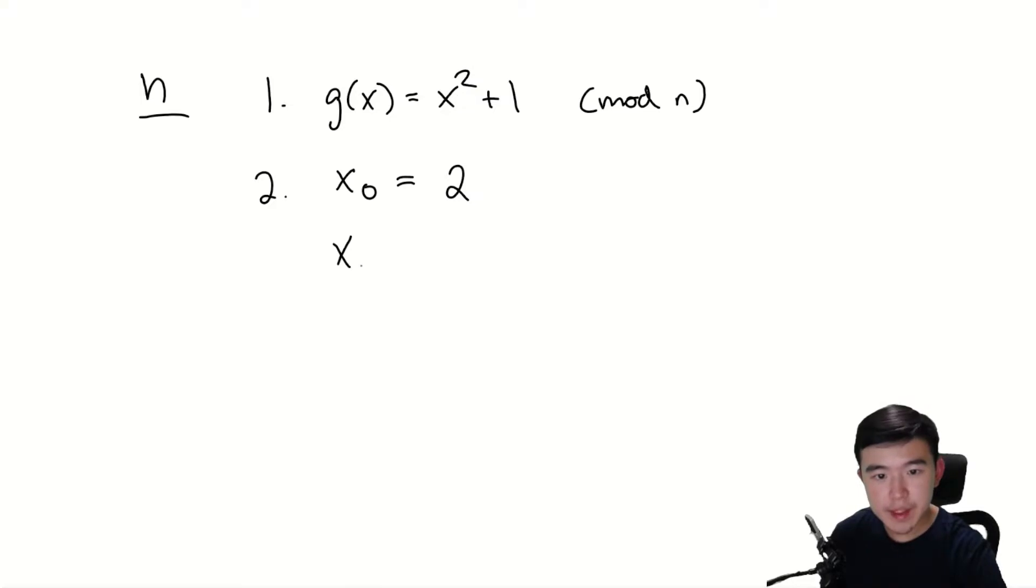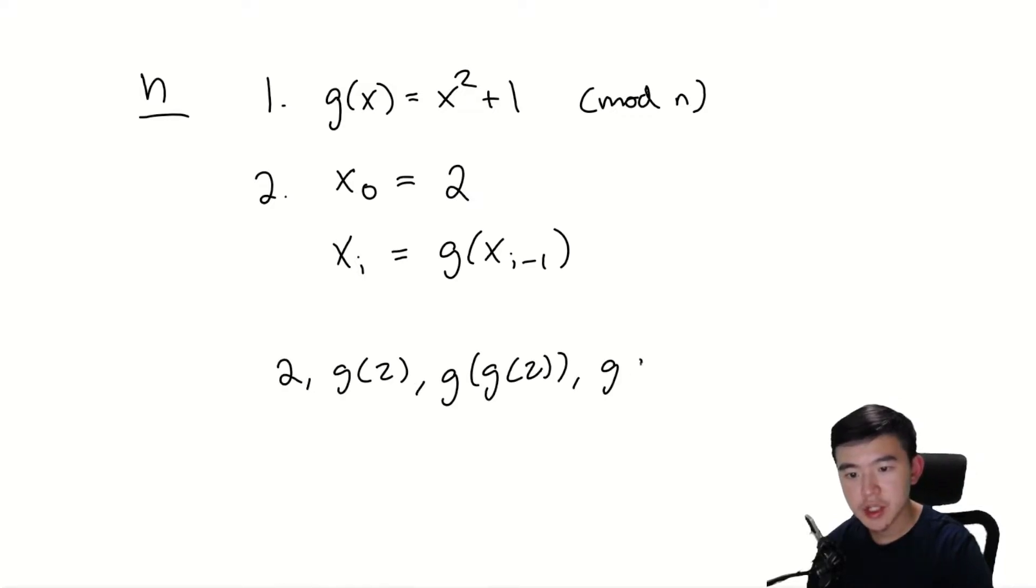Then we're going to generate a sequence, xᵢ, defined as xᵢ = g(xᵢ₋₁). So the sequence looks like 2, g(2), g(g(2)), g(g(g(2))), and so on. In general, x(i) = g applied i times to x₀.